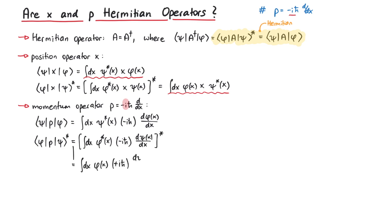After performing this complex conjugation, where we have to add a minus due to the imaginary unit, we notice that the derivative acts on the wrong function.